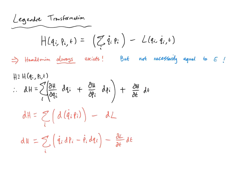It's worthwhile pausing to understand what we did with this Legendre transformation. We changed the functional dependence from the Lagrangian's generalized coordinates and velocities to the Hamiltonian's generalized coordinates and momenta. However, the resulting expression for dH can still involve generalized velocities as parameters — not as independent variables — and we must eliminate all remaining q̇_i to obtain the proper Hamiltonian. The key point is that the Legendre transformation switches the independent variables from q and q̇ to q and p, but we still need to explicitly eliminate the q̇_i from the resulting expression.